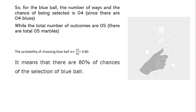We apply this probability formula to this example. So the probability of choosing a blue ball is four divided by five, which equals 0.80. This means there are 80% chances of selecting the blue ball.